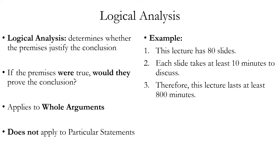This means that we're testing for the logical connection between premises and conclusion. The logical connection can be good even if the premises happen to be false in a particular case. We know that the premises and conclusion of this argument are all false. But if the premises were true, would the conclusion have to be true? The answer is yes, so it is a valid argument. If you did have a lecture with 80 slides, and if each slide took at least 10 minutes to discuss, it would also be true that the lecture would last 800 minutes. So it's useful to know that this argument form is valid, even if the conclusion happens to be false in this particular case.